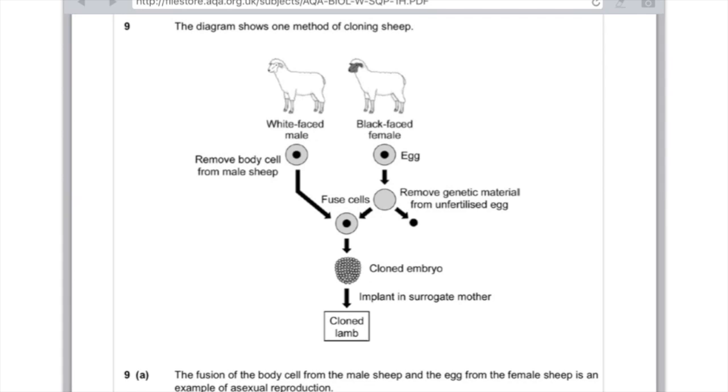Question 9: The diagram shows one method of cloning sheep. You have the white-faced male from which we're removing the body cell, which tells us that's the animal we're cloning. Then we have the black-faced female from which we're taking the egg cell. That's just being used effectively as an incubator which you're going to place the male's genetic information into.